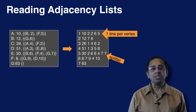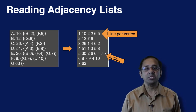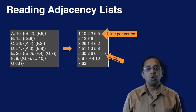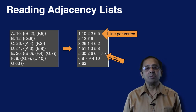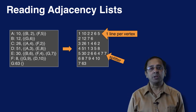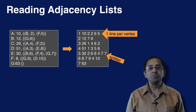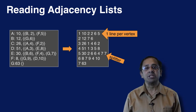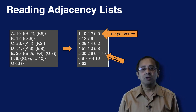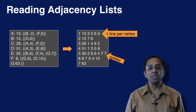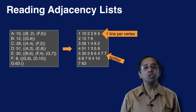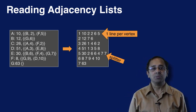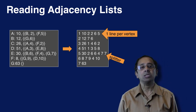Let us simplify the adjacency list representation a little. We remove the colons, commas, braces, and parentheses, and get a space-separated set of lines, one line for each vertex. We further replace the node IDs A, B, C, etc. with 1, 2, 3, etc., so that these IDs are integers.